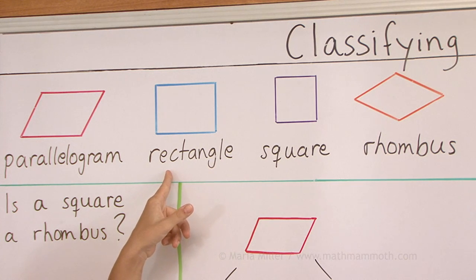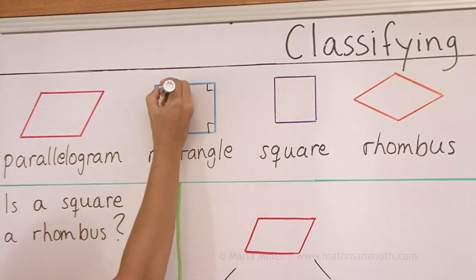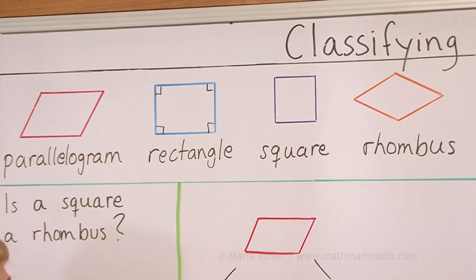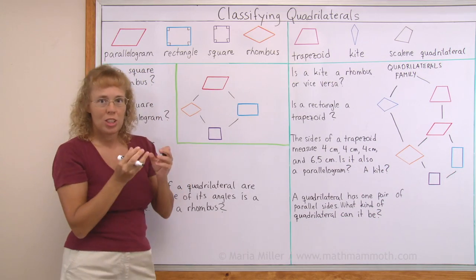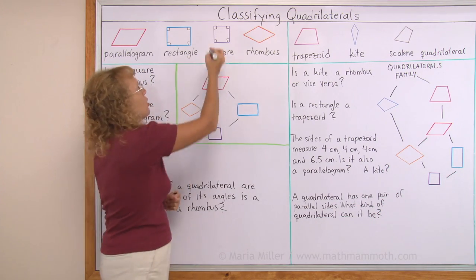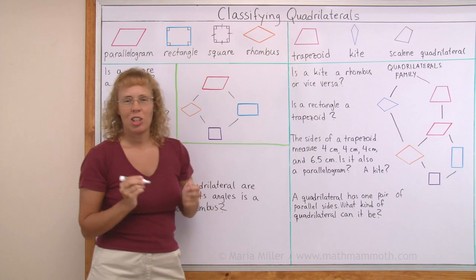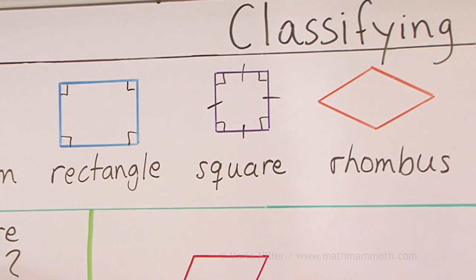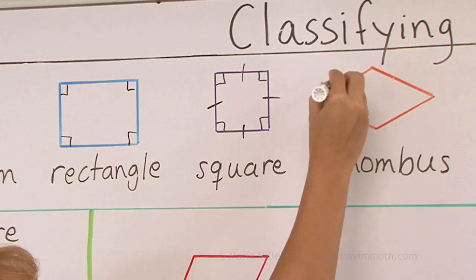A rectangle has four right angles. I could mark them here with these little squares. A square also has four right angles, but also each of its sides is congruent, in other words of the same length, and we can mark that with those little marks. Do you remember the definition of a rhombus? In a rhombus, also called a diamond shape, each side is of equal length — all the sides are congruent.